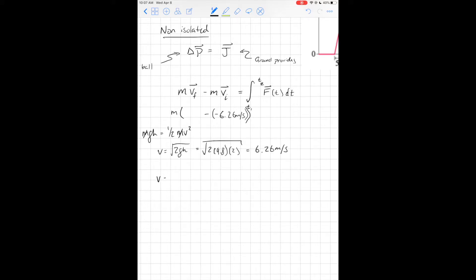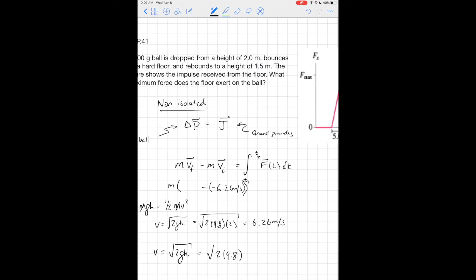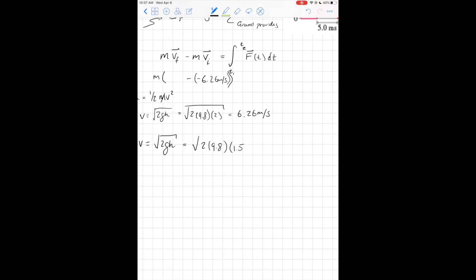The last thing that we need to do is figure out vf. We can do the exact same trick: v is going to be square root of 2gh. We know the height that we ended up with: 2 times 9.8 and I believe it was 1.5. Take a square root.